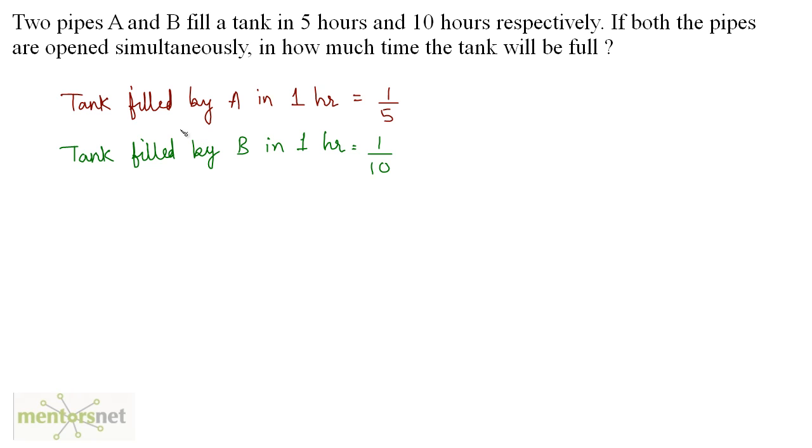Now if you have both the pipes open, we can calculate the tank filled by both of them in 1 hour and that will be just the addition of these two terms. This will be equal to 1 by 5 plus 1 by 10, and that's 3 by 10. So 3 tenths of the tank is filled in 1 hour.